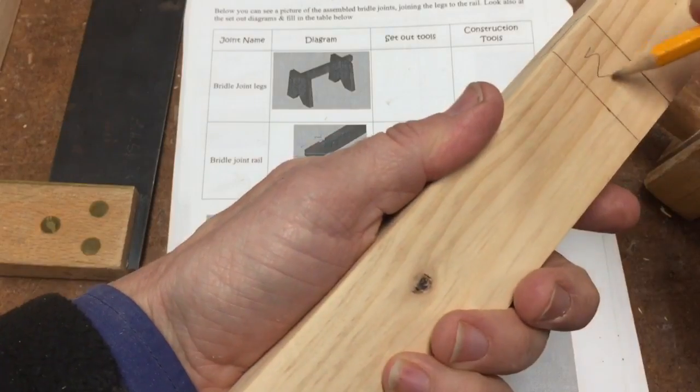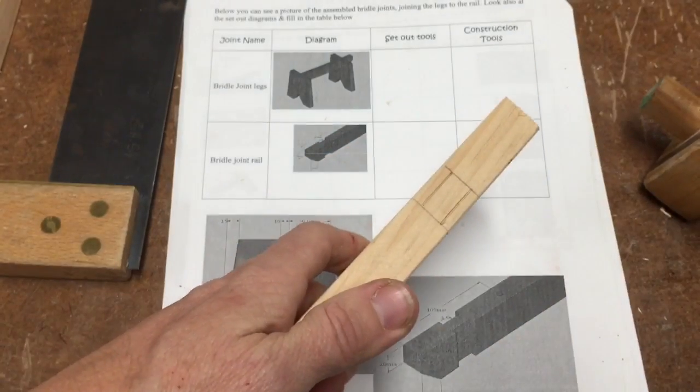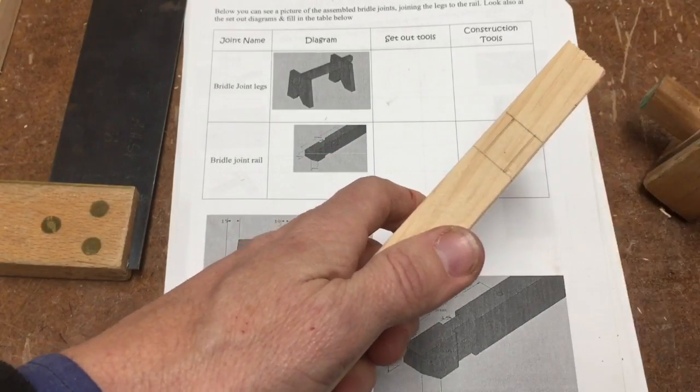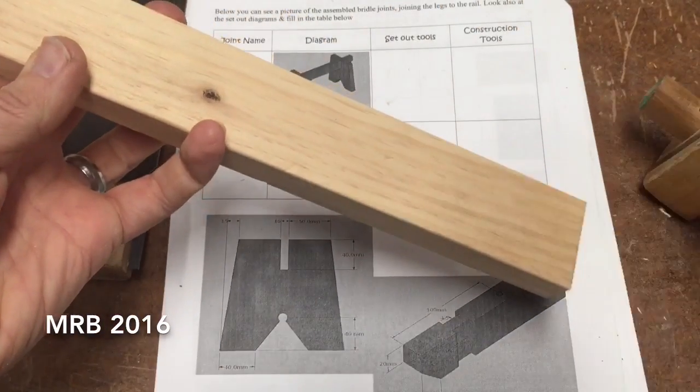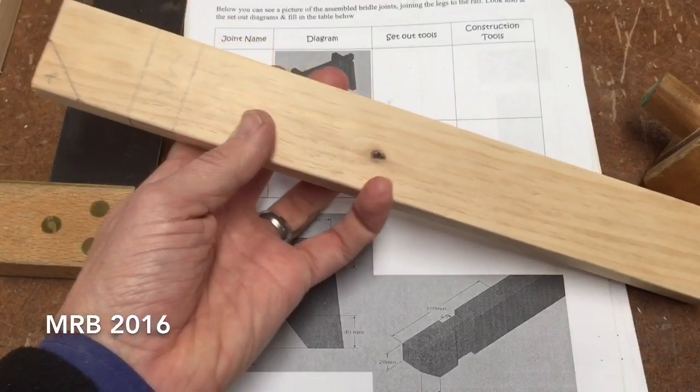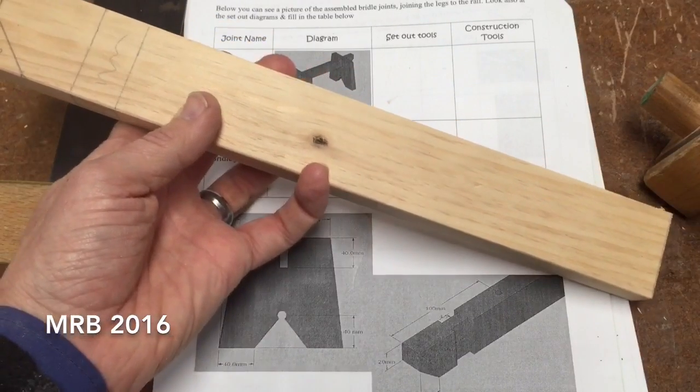So this is the section that I'm going to be getting rid of, leaving this little part as part of the bridle joint in the middle. You also repeat that on the opposite end of your rail so you've got similar joints and shaping on both sides of the rail.